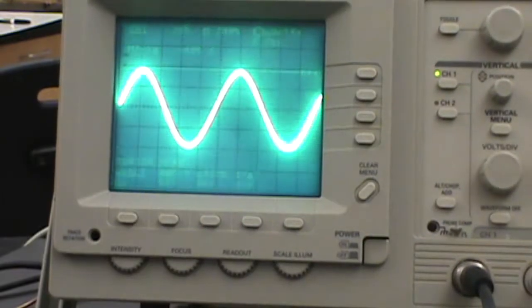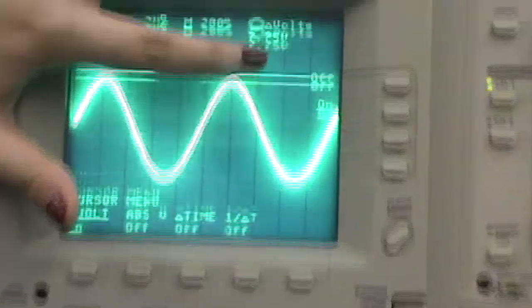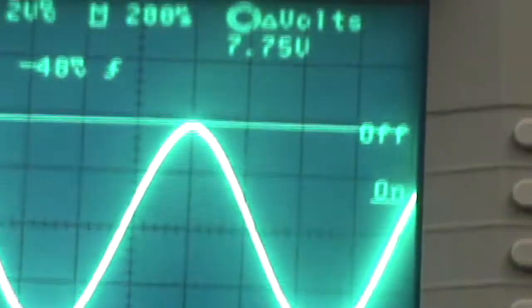As we can see, the difference between two cursors reads out 7.75 volts. Also, we can read the time coordinate of the waveform.